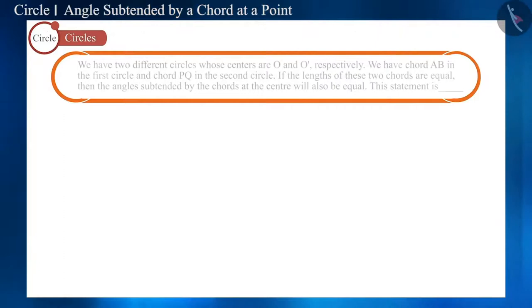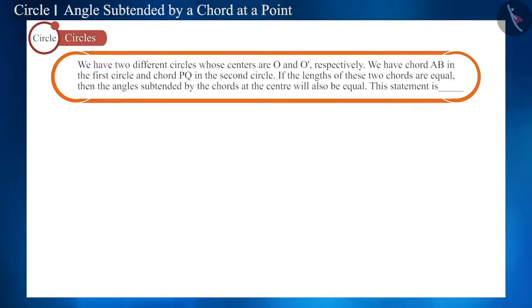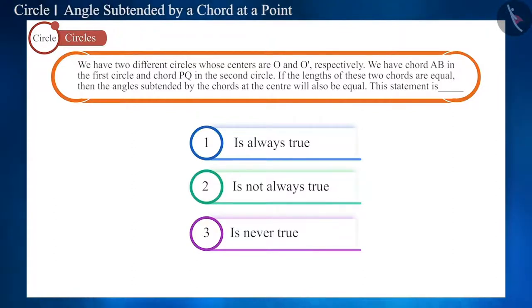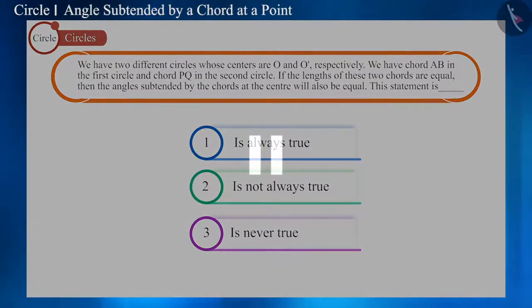We have two different circles whose centers are O and O' respectively. We have chord AB in the first circle and chord PQ in the second circle. If the lengths of these two chords are equal, then the angles subtended by these chords at the center will also be equal. From the given options, choose the correct option for this statement. You can try to choose the correct option by pausing the video.